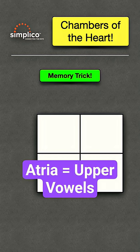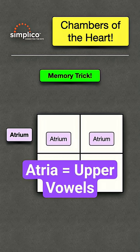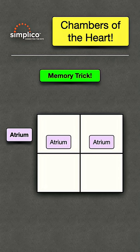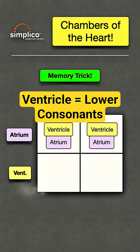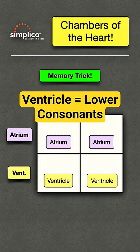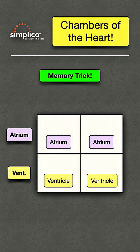Atria and upper both start with vowels — this will help you remember the atria are the upper chambers. Ventricle and lower both start with consonants — this will help you remember the ventricles are the lower chambers.